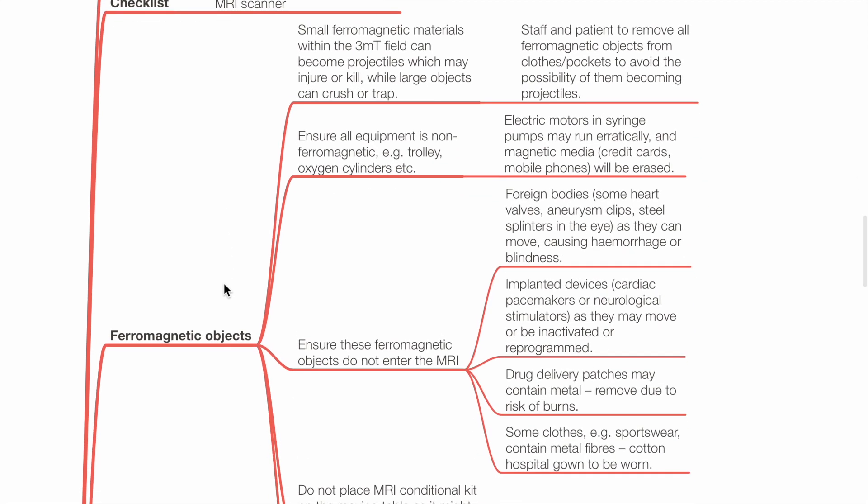Ferromagnetic objects: small ferromagnetic materials within the 3 mT field can become projectiles which may injure or kill. Large objects can crush or trap. All ferromagnetic objects should be removed and placed away from the MRI scanner. Ensure all equipment such as trolleys and oxygen cylinders is non-ferromagnetic.